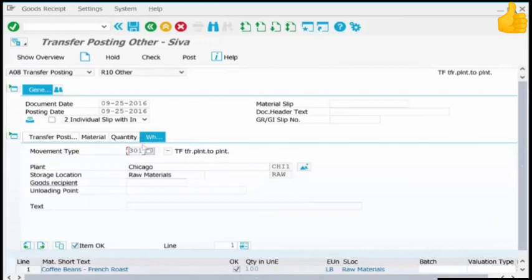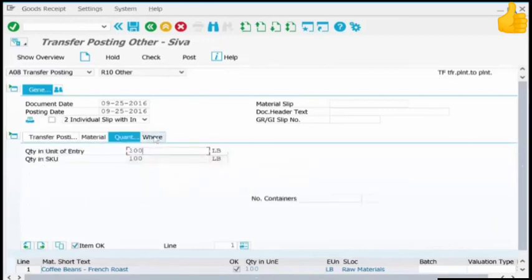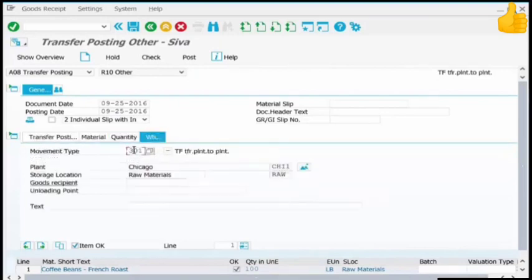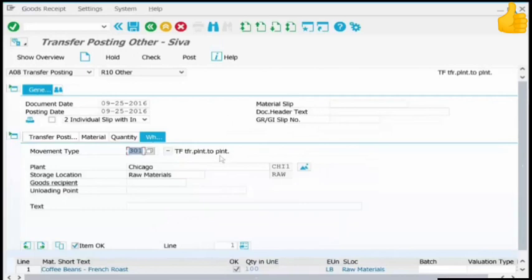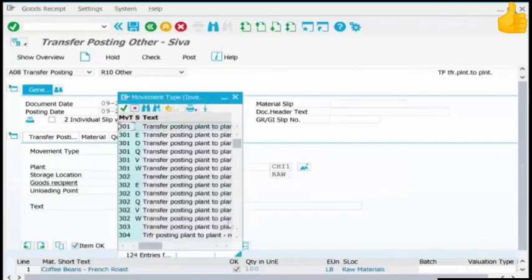When you click on the Where tab, we move from quantity to the Where tab. It says 301, transfer from plant to plant — but in our case we are transferring from one storage location to another storage location, and both belong to the same plant. So it's not really a transfer from one plant to another; it's a transfer within the plant, meaning movement type 301 is not the right type.